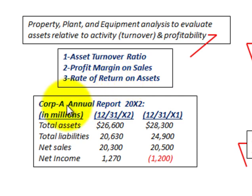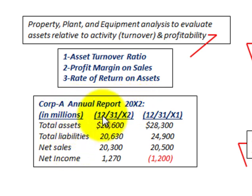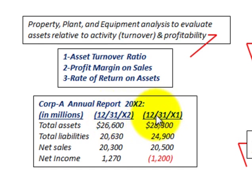We're going to be working off this example where Corporation A's annual report for 20x2 is shown in millions of dollars. It shows figures for both the end of year 20x2 and the previous end of year 20x1. We have our total assets amounts showing.